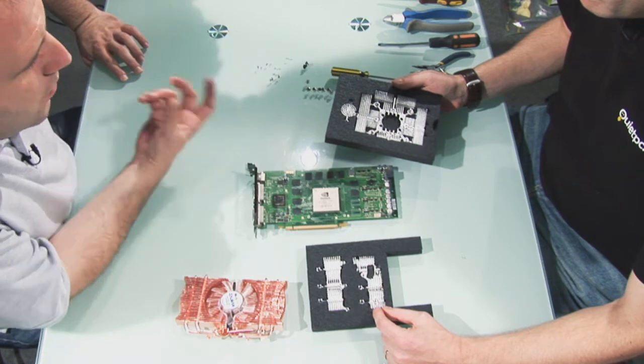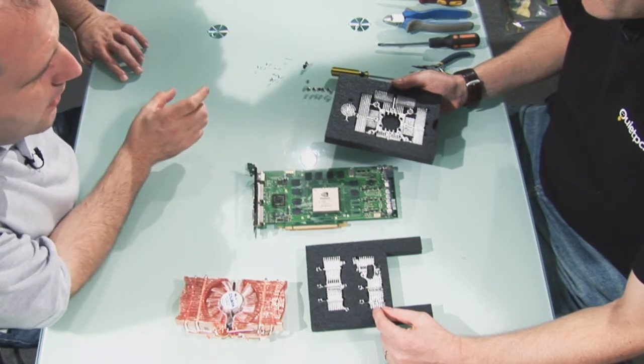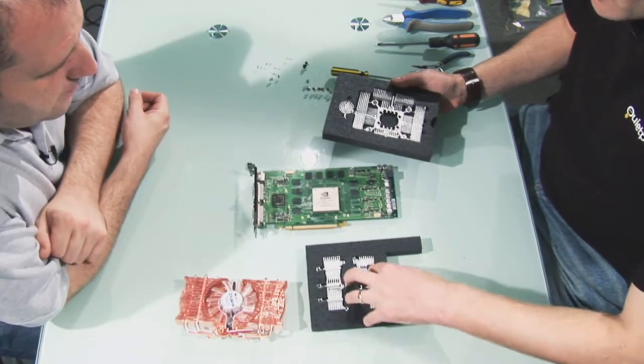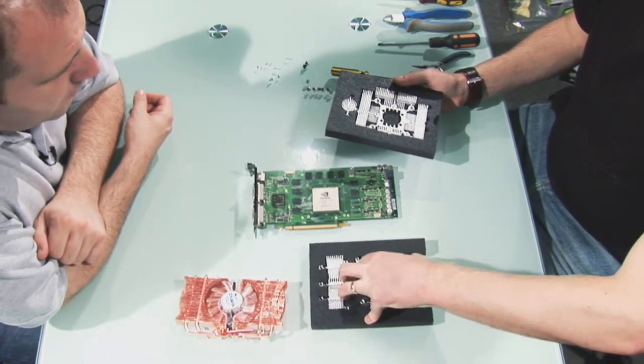So you'd assemble that first and then put it on there, so it bolts itself together and then goes on here? Yep, this is an 8800 GTS, so we just need to use this heatsink here.